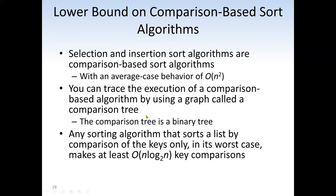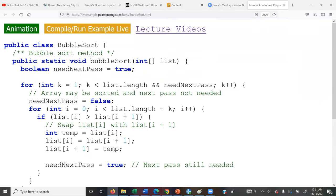We can trace the execution of comparison-based algorithms using a graph called the comparison tree, which is normally a binary tree. Any sorting algorithm that sorts a list by comparison only has a worst case. That would be the end of our lectures here. In our next lectures, we are going to cover the concept of quick sort, radix sort, and merge sort. Thank you.